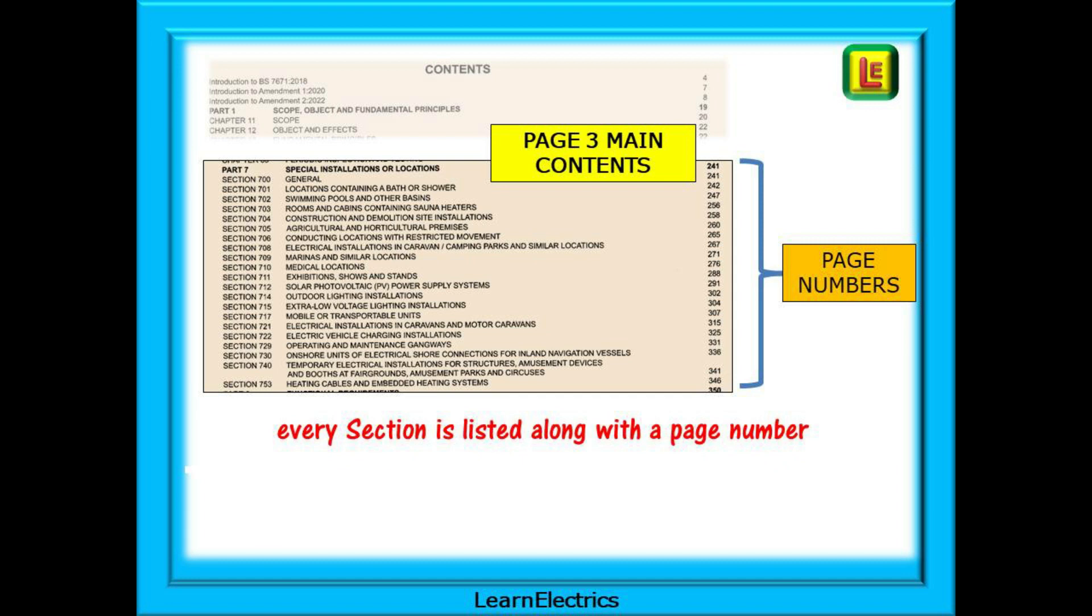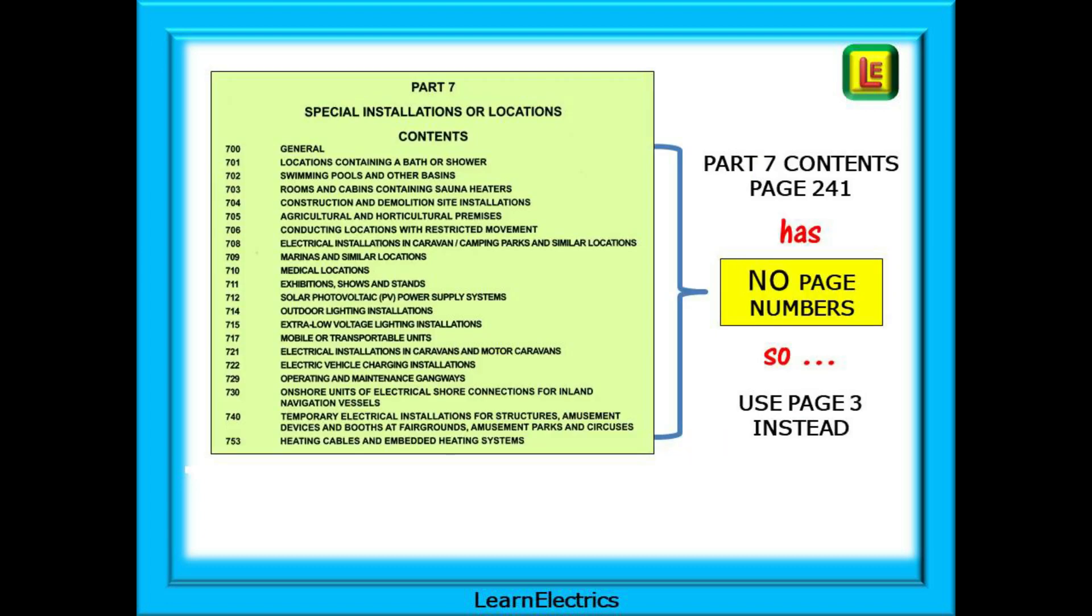I always start my search for any answers on page 3, the main contents page. Here you will find Part 7 about halfway down where each section is listed with its title and page number. If you have seen my previous 18th edition videos, you will know that I always tell you to use the contents pages for each of the parts as well, but not for special locations. It is of no use to you whatsoever.